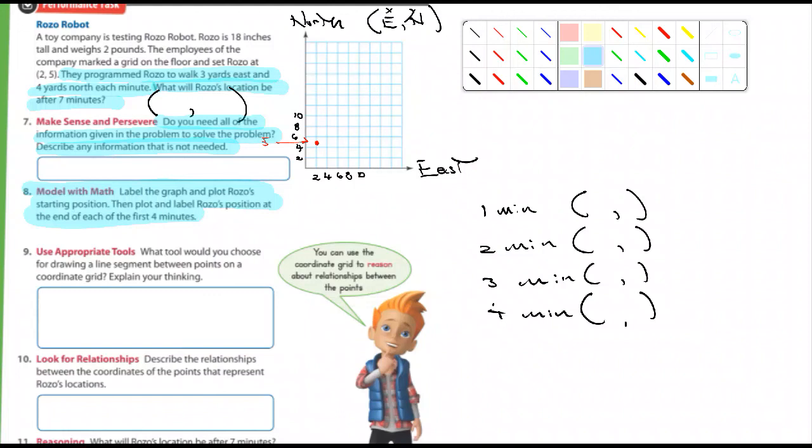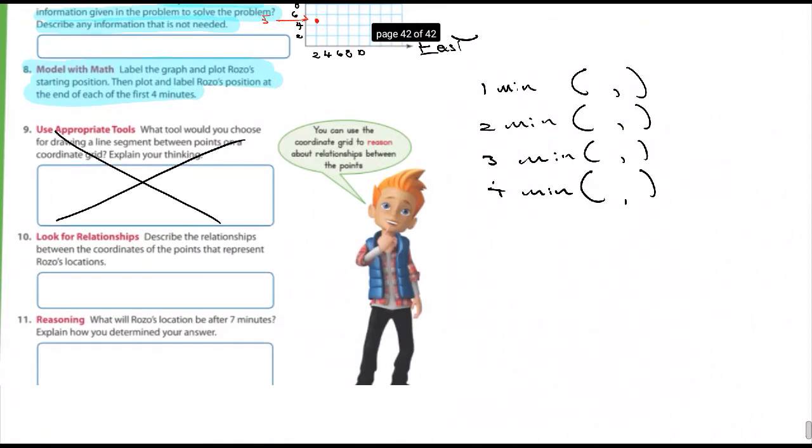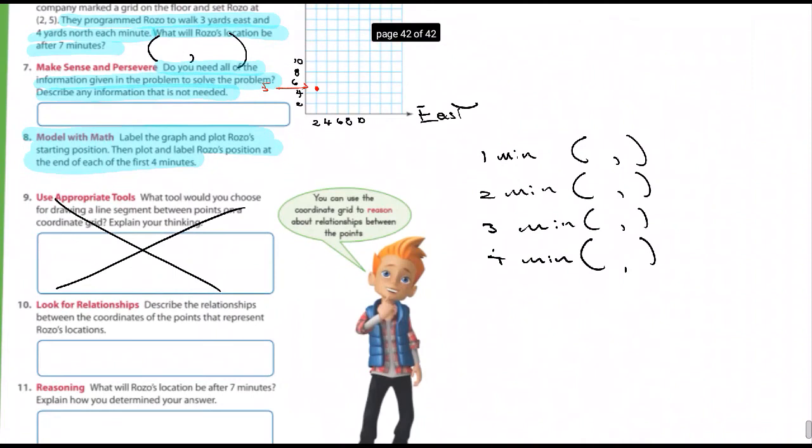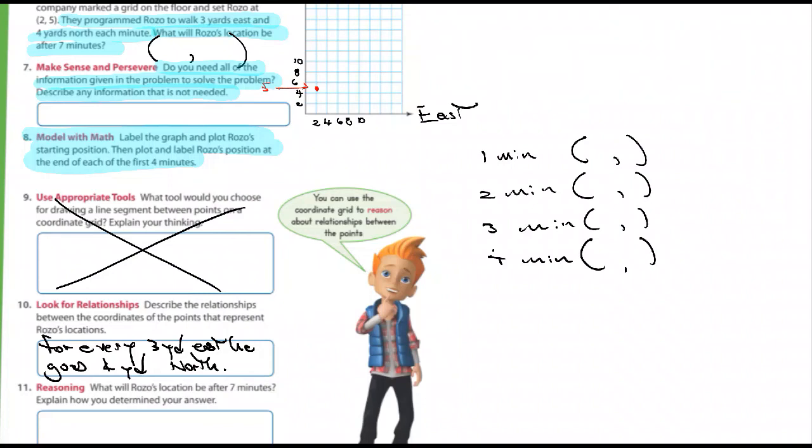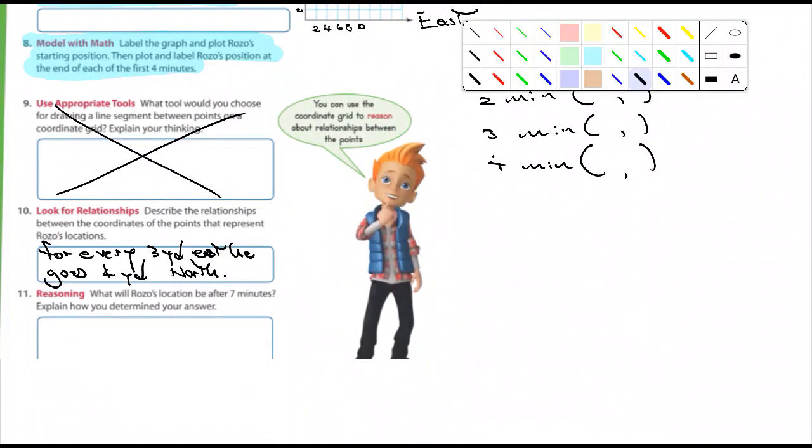What tool would you choose for drawing a line segment? Yeah, that's lame. A ruler. Some kind of straight edge. So, cross out 9. Describe the relationships between the coordinates of the points that represent his locations. I'm not quite sure what they're looking for. But, I mean, let's think about it and not make it harder than it is. So, he goes 3 yards east. He goes 4 yards north. Ratio of 3 to 4. And then number 11. They ask the question,